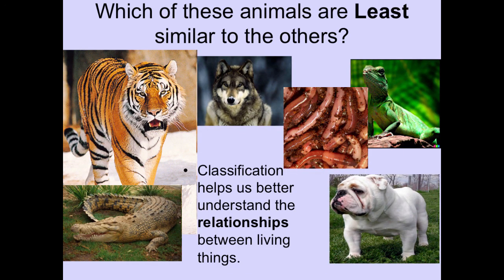Let's look at all these pictures of animals. Which of these animals is least similar to the others? You have a tiger, wolf, earthworm, lizard, dog, and alligator. They're all animals, and almost all of them, except one, have four legs — and that leads you to the earthworm. The earthworm is the least similar to all the others. Even though earthworms are considered animals, they do not have any legs and they also don't have a backbone or a spine like all the others do. We call this an invertebrate.